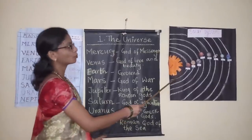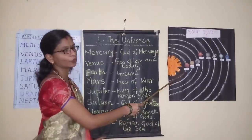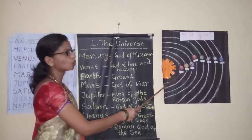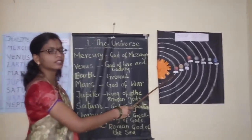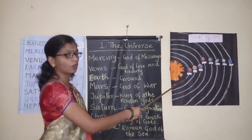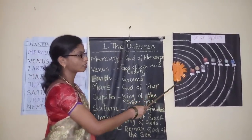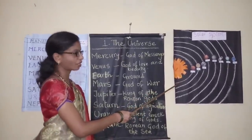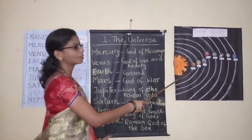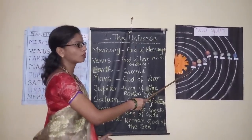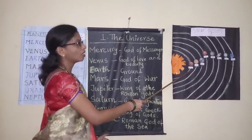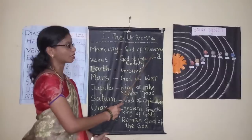The first and foremost planet in the solar system is Mercury. It is very close to the sun, so it is very hot and life does not exist on Mercury. Most of the planets are named after Roman gods or Greek gods. Mercury is known as the Roman god of messenger.